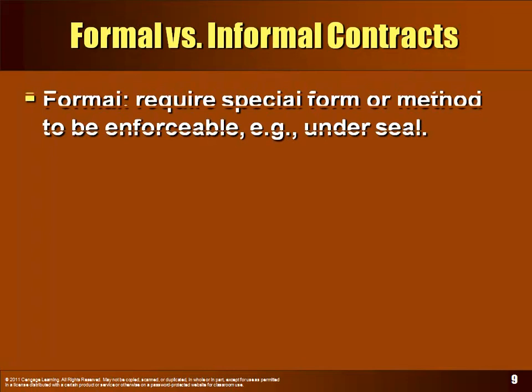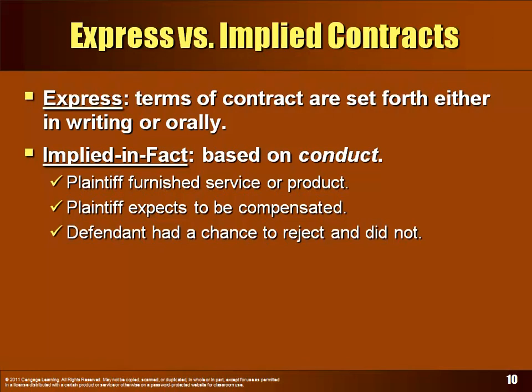For an implied-in-fact contract, there are three factors. It's based on the conduct of the parties. The plaintiff — the one suing — needs to show they provided something to the other party, the defendant: some type of service or product. When they did it, it wasn't voluntary for nothing — they expected to be compensated. And the defendant took whatever was provided, had a chance to reject it, but didn't.